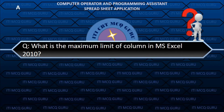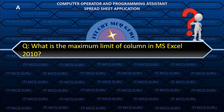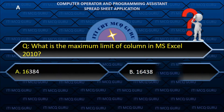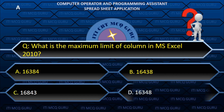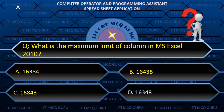What is the maximum limit of columns in MS Excel 2010? A. 16,384.